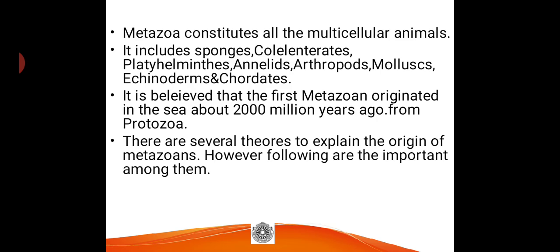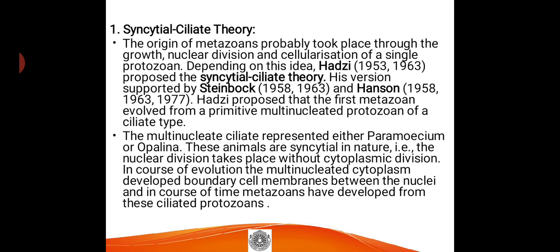The first theory is the Syncytial Ciliate Theory. The origin of Metazoa probably took place through the growth, nuclear division, and cellularization of a single protozoan. Biologist Hadzi proposed this theory in 1953; it was later supported by Steinbock in 1958 and Hanson in 1958. Hadzi proposed that the first metazoa evolved from a primitive multi-nucleated protozoan of a ciliate type — resembling paramecium or opalina, more of an opalina-like organism.